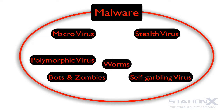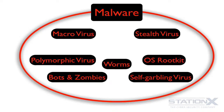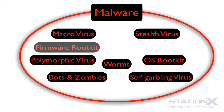You have rootkits. Rootkits are the worst software-based malware you can get. They are usually embedded into the kernel of the operating system so they can hide their existence completely from the operating system.